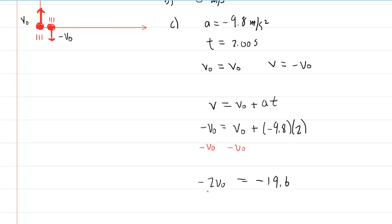And then finally, to solve for the initial velocity, we would just divide both sides of the equation by negative 2. And when we do that, we can see the initial velocity is 9.8, and this will be meters per second. So this would be the correct answer to part C of the question.